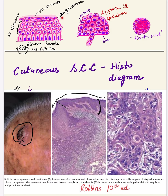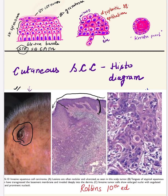Next is the stratum granulosum — these are ovoid cells with keratohyaline granules in their cytoplasm, hence the name. The topmost layer is the stratum corneum, composed of keratin. In mucosal epithelium, such as the oral cavity or anal canal, the stratum corneum retains nuclei — this is called parakeratosis. But in the keratinized stratified squamous epithelium of the skin, the nucleus is lost and there is only a keratin layer with no nuclei.